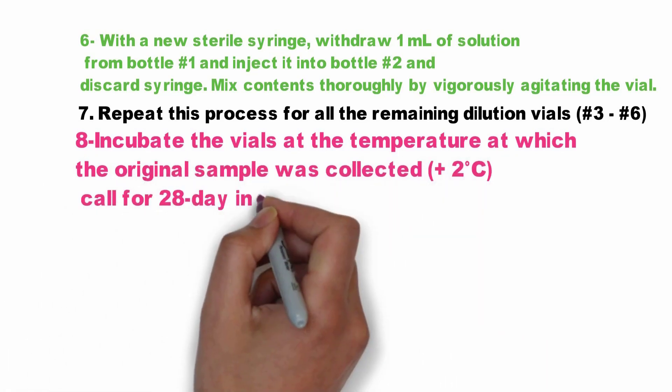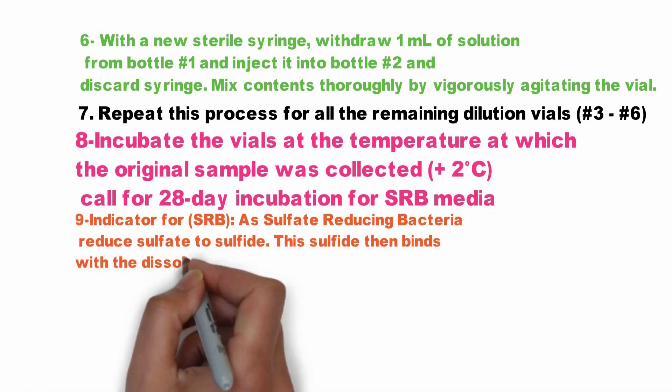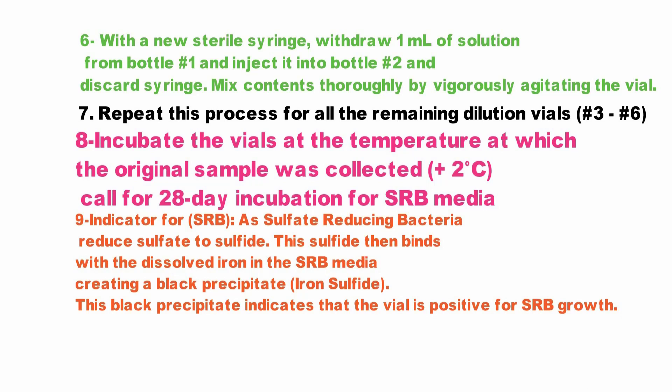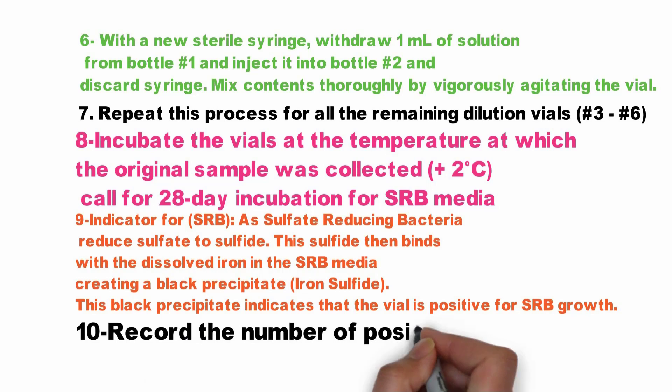Incubate the vials at the temperature at which the original sample was collected, plus two degrees, for 28 days of incubation. As the SRB media indicator works, sulfate reducing bacteria reduce sulfate to sulfide, and this sulfide then binds with the dissolved iron in the SRB media, creating a black precipitate — iron sulfide. This black precipitate indicates that the vial is positive for SRB bacteria growth.